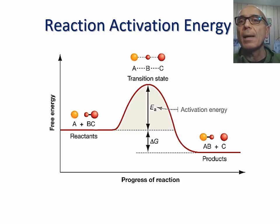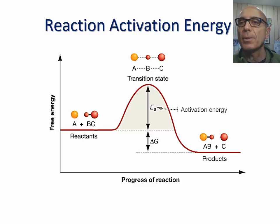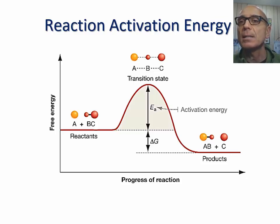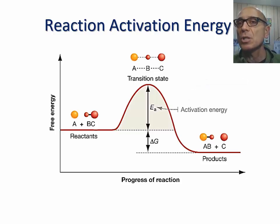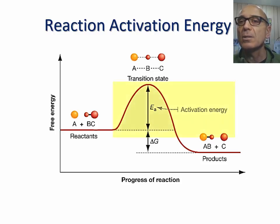The rate of a chemical reaction is independent of delta G, which is the difference in free energy between reactants and products. The rate of a chemical reaction is rather determined by the size of the barrier that must be surmounted for the reaction to proceed. This barrier is known as the activation energy barrier. For a reaction to be initiated, a certain amount of energy is needed to kickstart the reaction. This is known as the activation energy of a reaction.